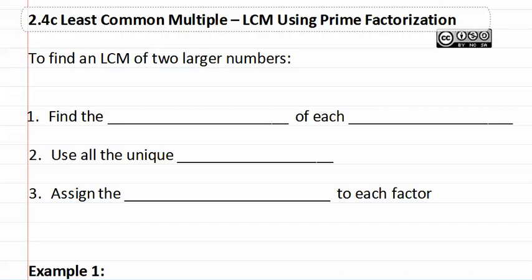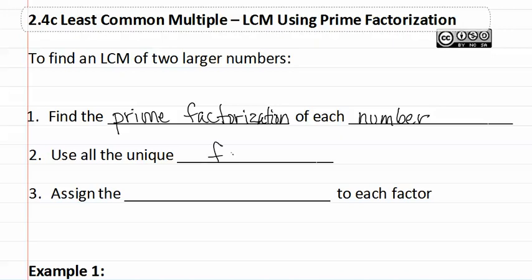Least common multiple using prime factorization. To find a least common multiple of two larger numbers, we must first find the prime factorization of each of the numbers. Then we will be using all of the unique factors, meaning the ones that that number has and the other number does not. Assign the highest exponent to each factor. This set of steps will make more sense as we look at them through example one.